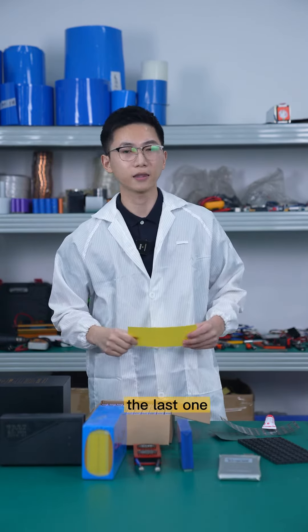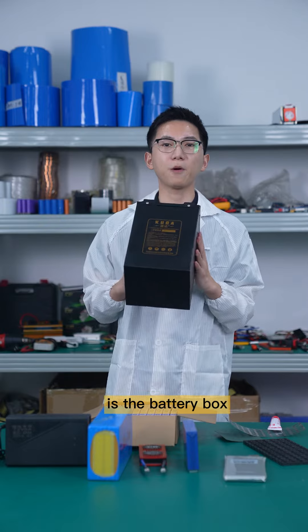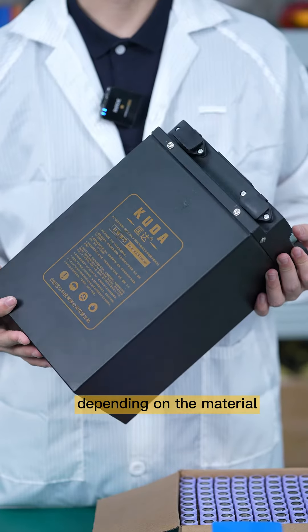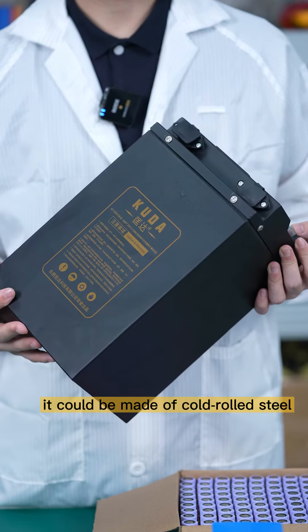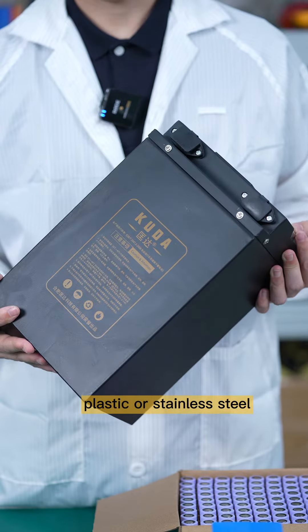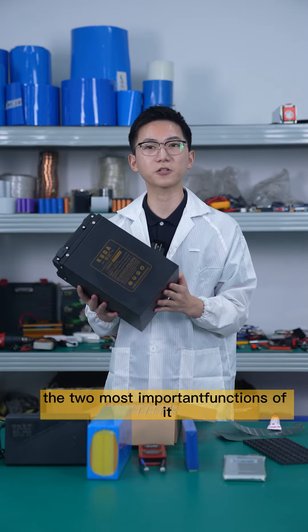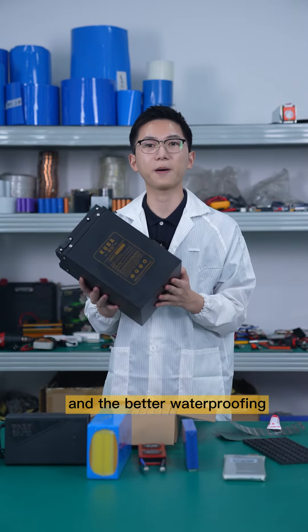The last one is the battery box. Depending on the material, it could be made of cold-rolled steel, plastic, or stainless steel. The two most important functions are for convenience and better waterproofing.